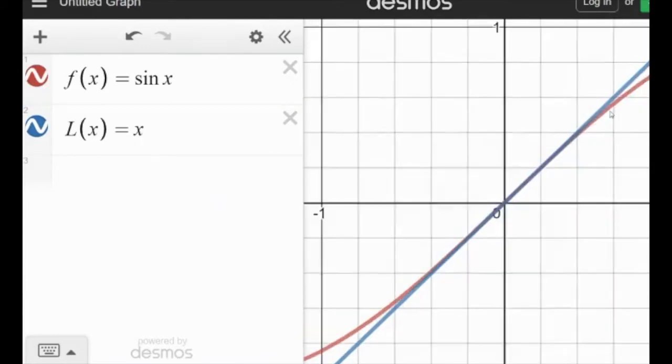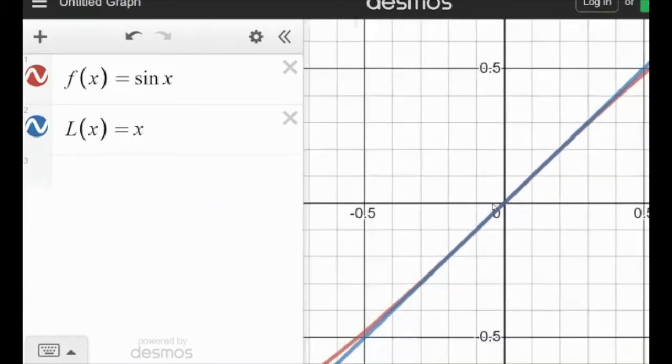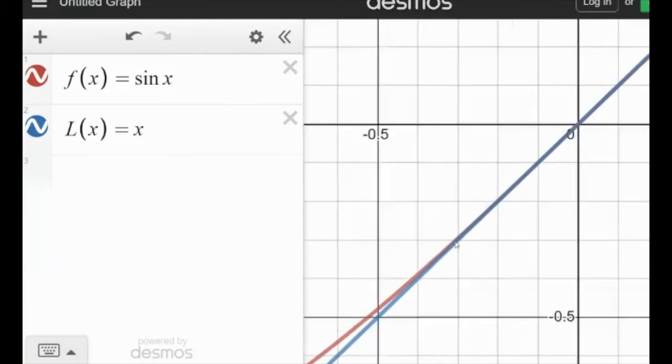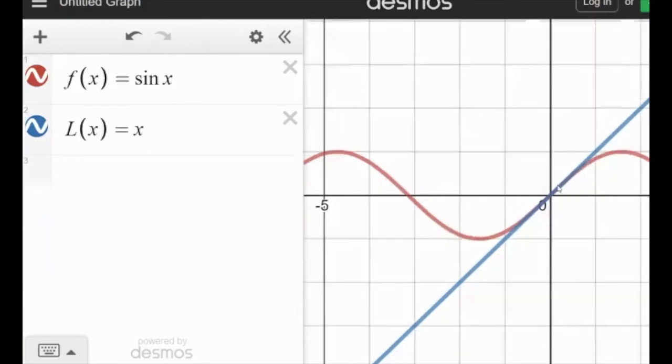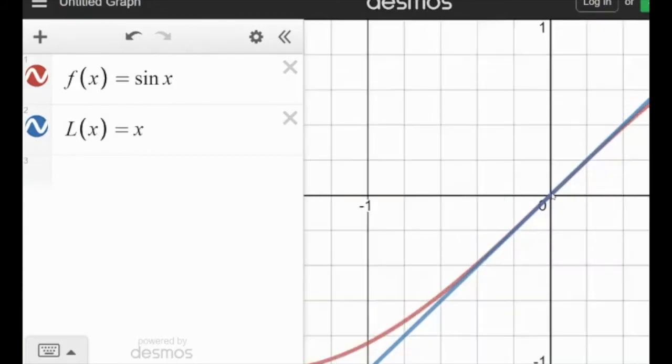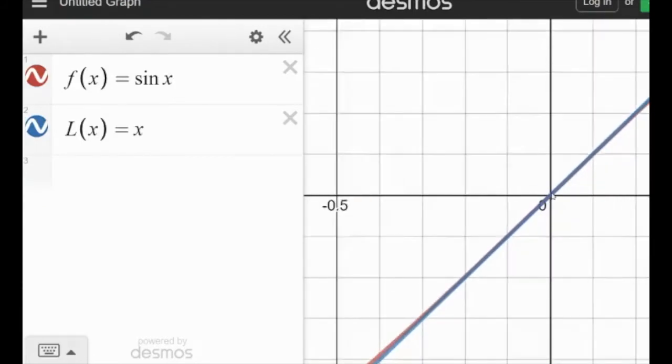Okay, you can see it kind of deviate, it starts to deviate here, it deviates a lot more here, but you can see around 0, it's pretty much exact. Okay? Now if I zoom in here, you'll see that it is, of course, not exact, but for all intents and purposes, anything that's around 0 is going to be a pretty good approximation for sine.